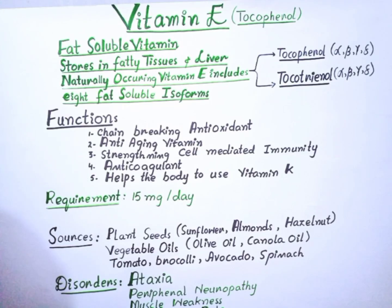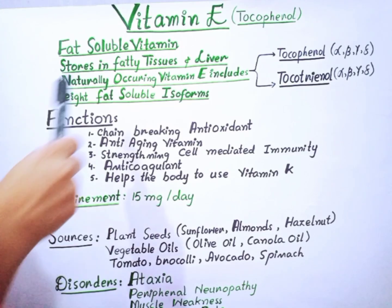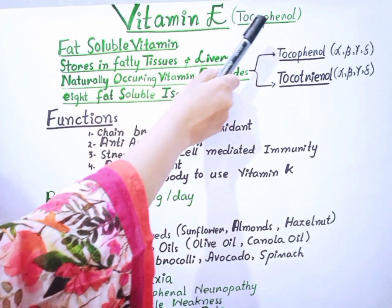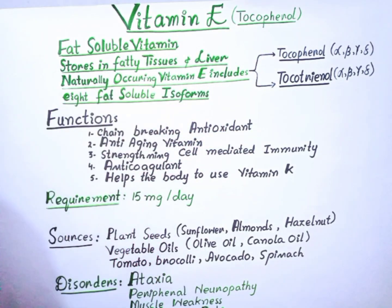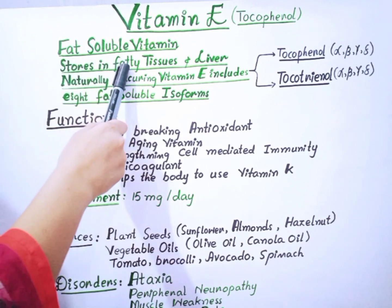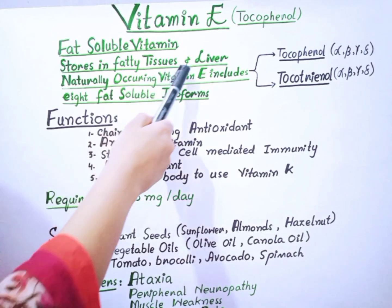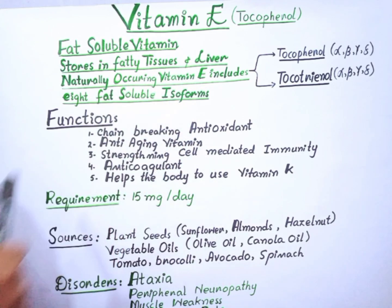Hello everyone, welcome to Learn Science with Me. Let's learn about Vitamin E, or tocopherol. Vitamin E is a fat-soluble vitamin. Our body stores this vitamin in our fatty tissues like adipose tissues and liver.